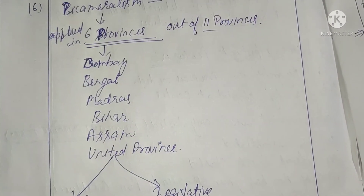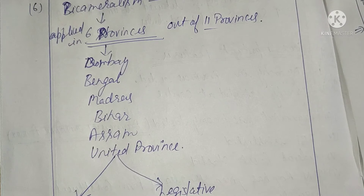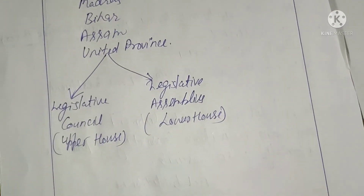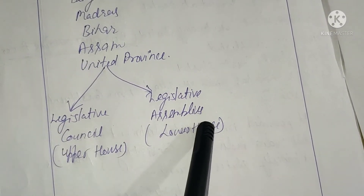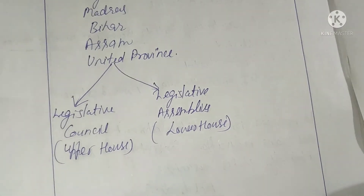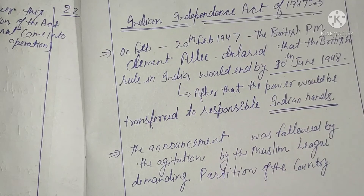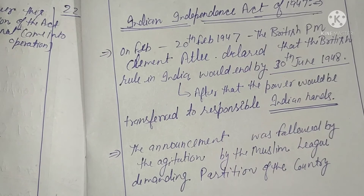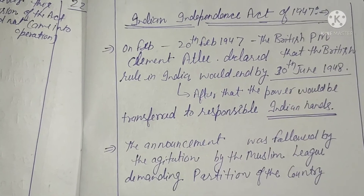Bicameralism was also introduced under the 1935 Act. That covers the key points of the Government of India Act 1935. Moving on, the last topic in the historical background is the Indian Independence Act 1947.